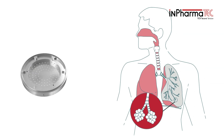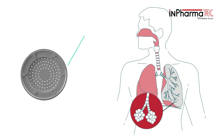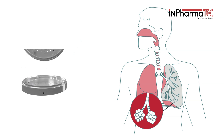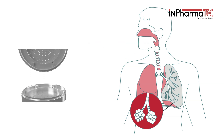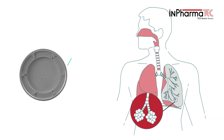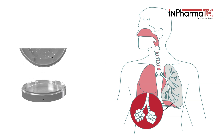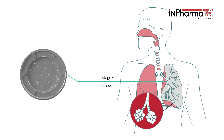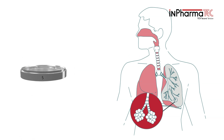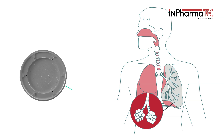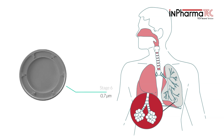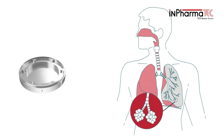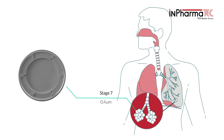Stage 1 represents the nostrils and nasal passage. Stage 2 reproduces the pharynx. Stage 3 follows particles as they go down through the trachea and primary bronchi. Stage 4 is therefore the secondary bronchi. Stage 5 is the deeper part of the terminal bronchi. Stage 6 reproduces the alveolar duct, while Stage 7 finishes the voyage with the small alveoli.